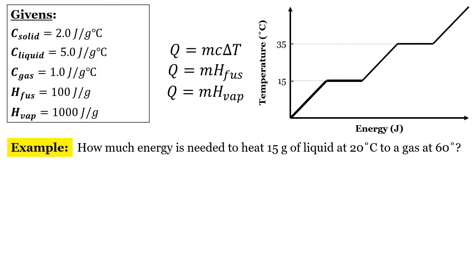It says how much energy is needed to heat 15 grams of a liquid at 20 degrees Celsius to a gas at 60 degrees Celsius. Well, 20 degrees Celsius is right about here. And we want to go to a gas. So we're going to have to hit this point right here where we transition from a liquid to a gas. That's where we've completely transitioned over to a gas. Now, from there, we're not done because we need to raise the temperature up to 60 degrees, which is this point up here.